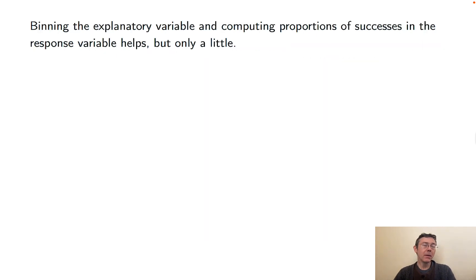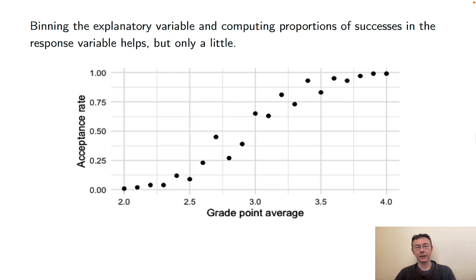Speaking of which, if you bin the explanatory variable, which is in this case GPA, and then compute proportions of success in the response variable, that doesn't help as much as you might like.